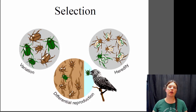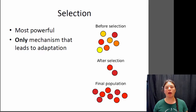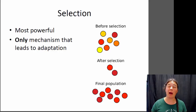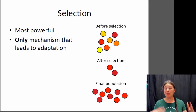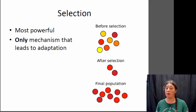Hi, this is Dr. Claire and today we're going to be talking about selection. Selection is one of the mechanisms of evolution and is probably the most well-known mechanism. The reason it's probably the most well-known is because it is probably the most powerful mechanism of evolution as well. It can cause, depending on the selective pressure on a population, very rapid change within a population over a very short period of time.